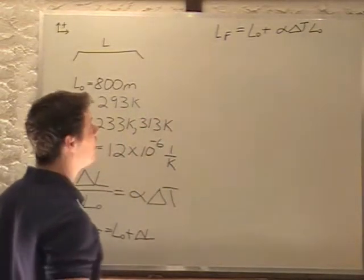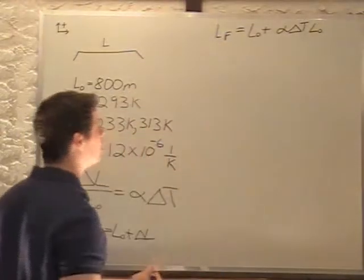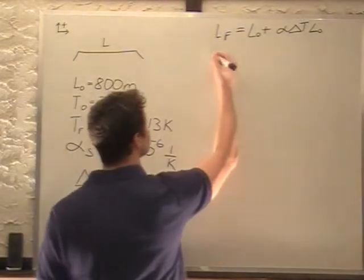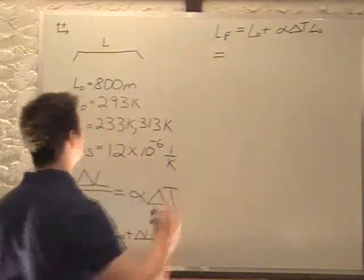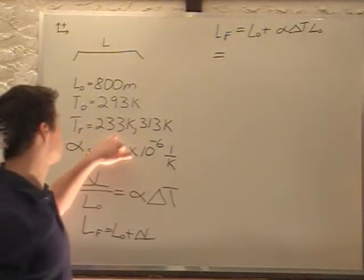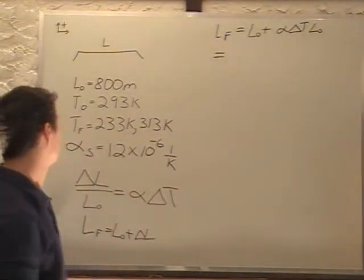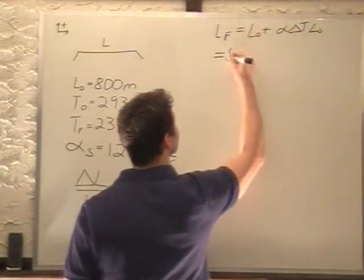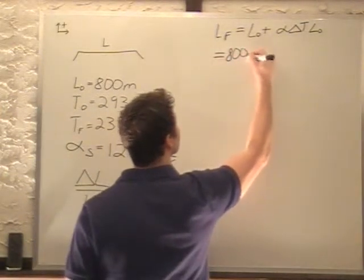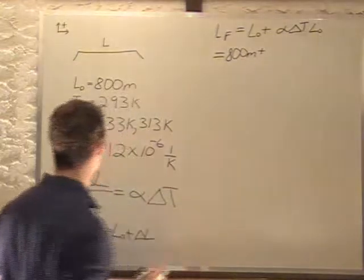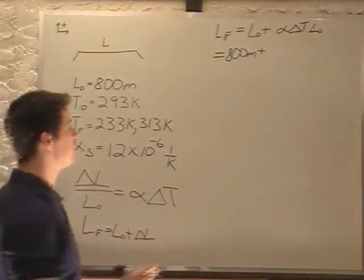We can factor out L0, but I'll just leave it in because this is pretty simple. So let's do this first for our low temperature to see how much it contracts. Our original length is 800 meters plus alpha, which is 12 times 10 to the minus 6, 1 over Kelvin.